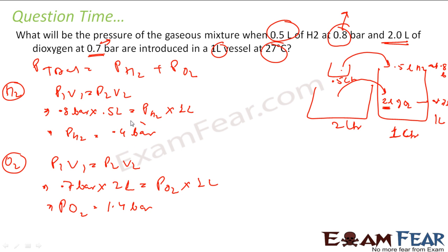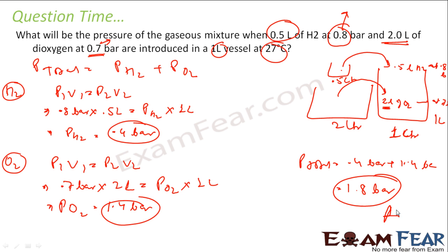So, the total pressure is, you add both this pressure. So pressure total will be 0.4 bar plus 1.4 bar, that is nothing but 1.8 bar and that is my answer, that is my total pressure.